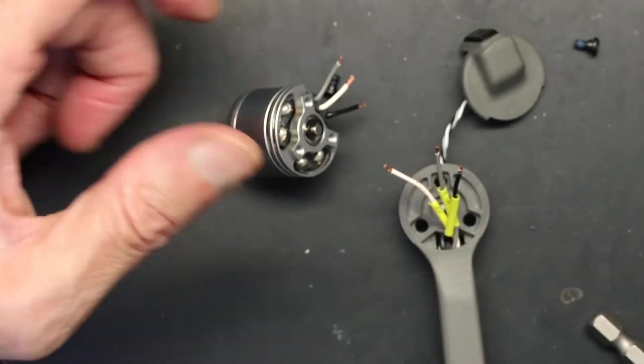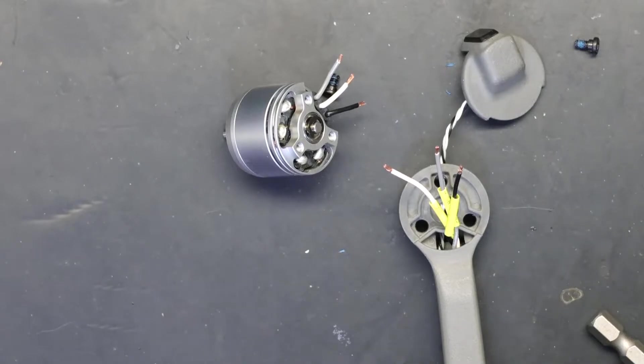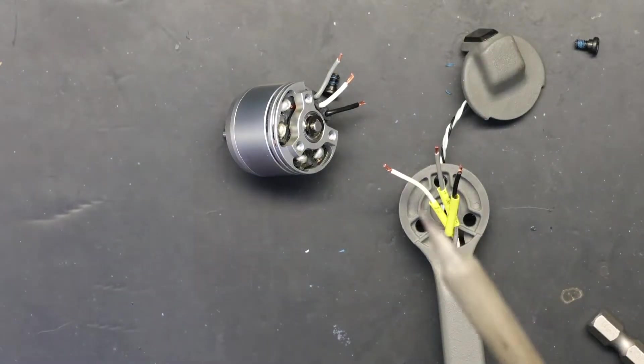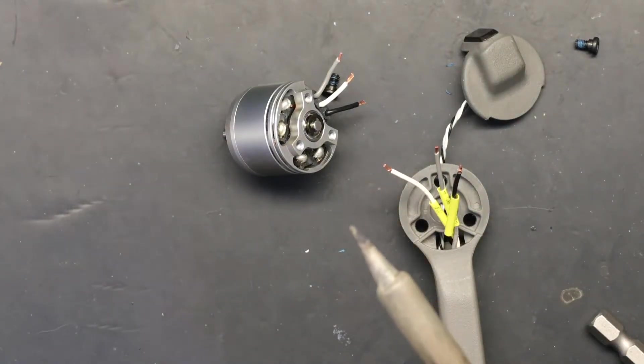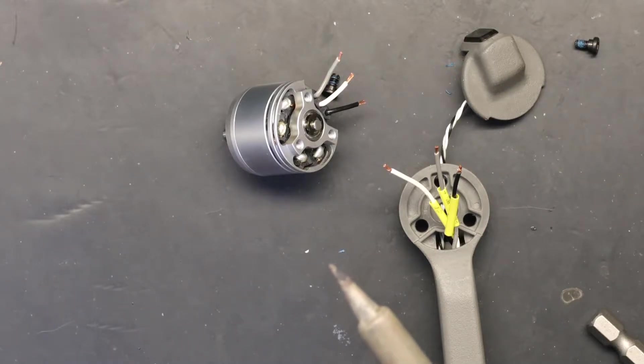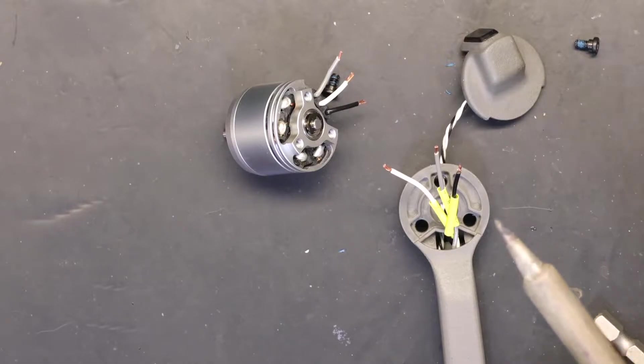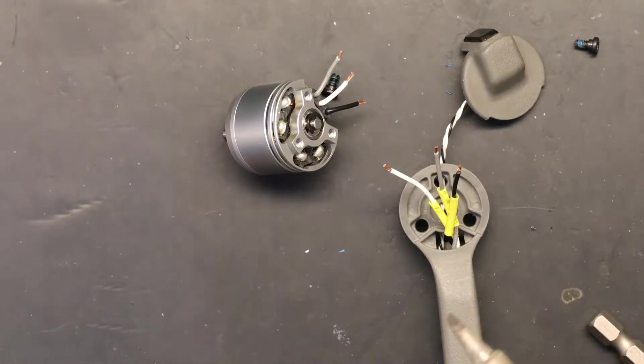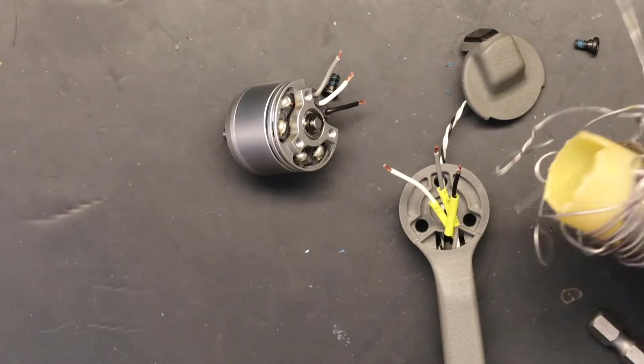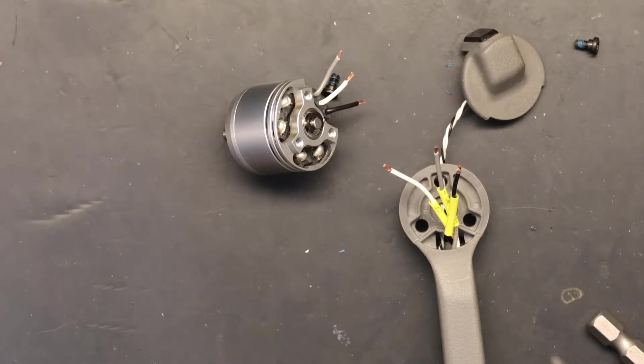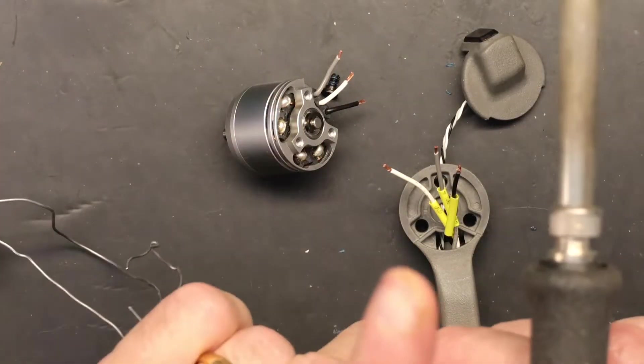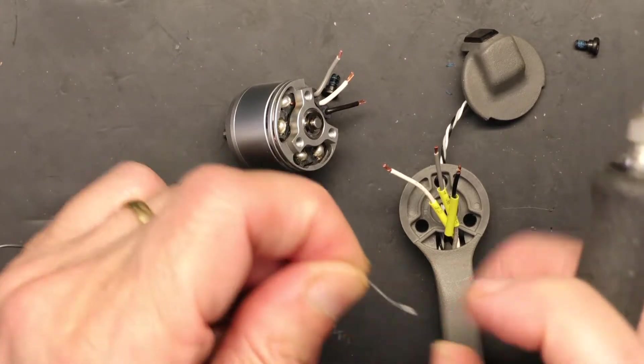Now we need the soldering iron. We have to heat it up to 750 degrees depending on the type of solder that we are using. Mine melts at 750 degrees.